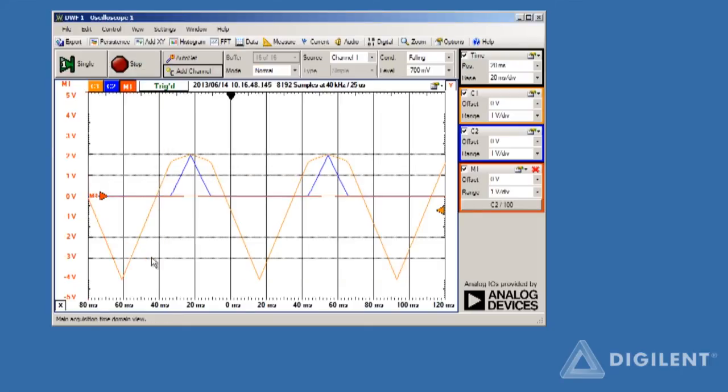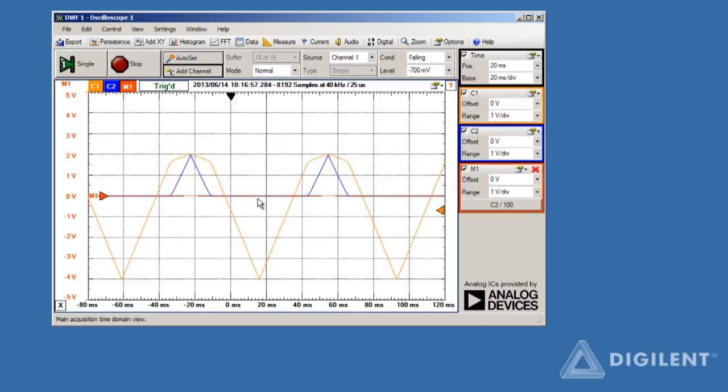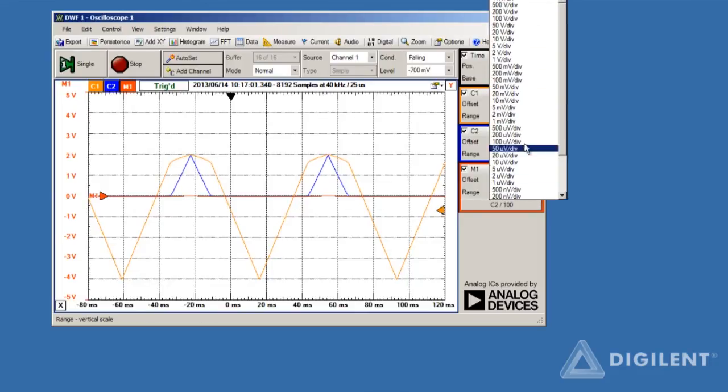Click on OK. We get a new math window control box and a line on our plot which corresponds to the current through the resistor. The current's a pretty small number, so we need to change the scale on our plot. Let's change it to 5 millivolts per division.